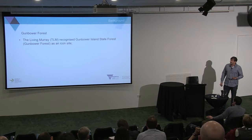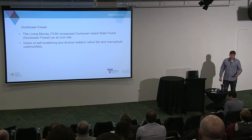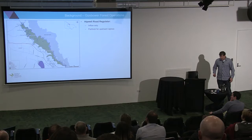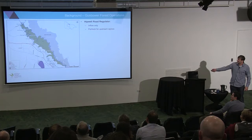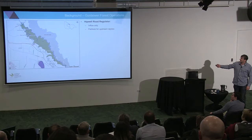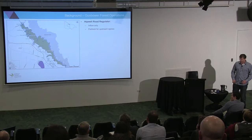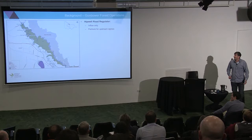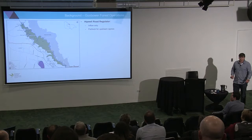Charles has covered a bit of background about the Gunbower Forest. As he said, it's recognized as an icon site with the vision of self-sustaining diverse wetland native fish and macroinvertebrate communities. It's in the north central of Victoria — an island with the Murray River bounding one side and Gunbower Creek running through the other. The Hipwell Road regulator towards the top end of the forest is used for inflow only — managed or environmental flows — and can be managed to stop fish getting off the floodplain.